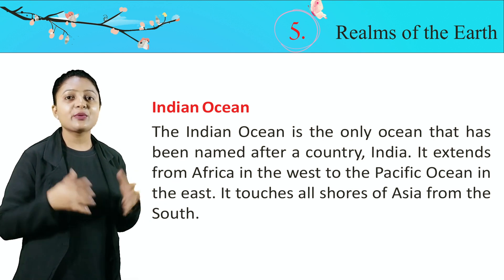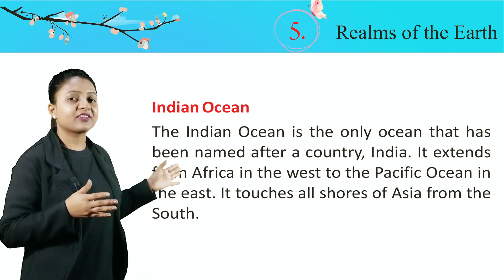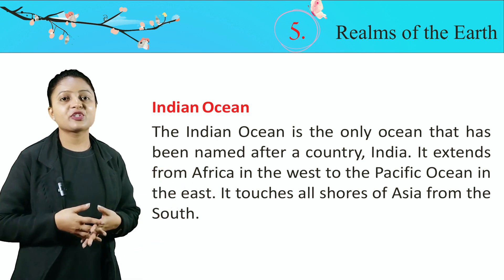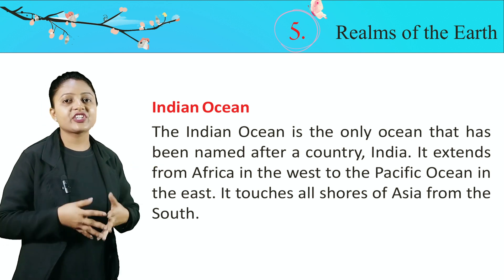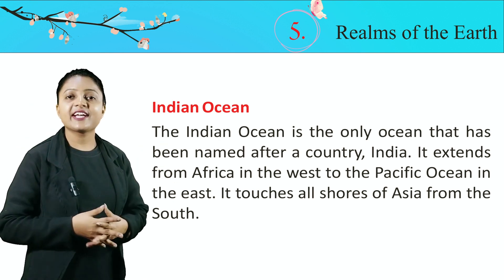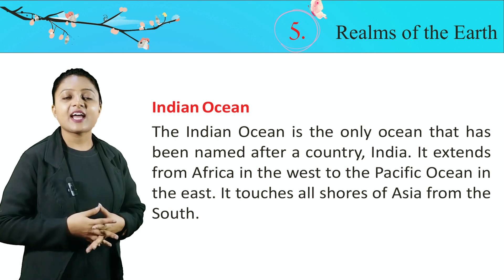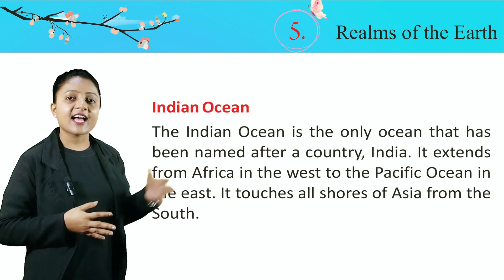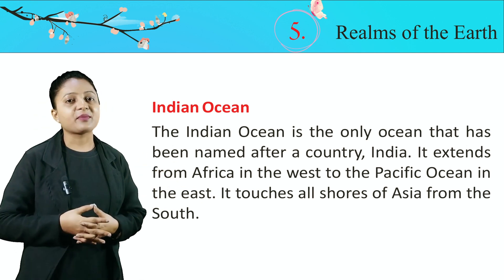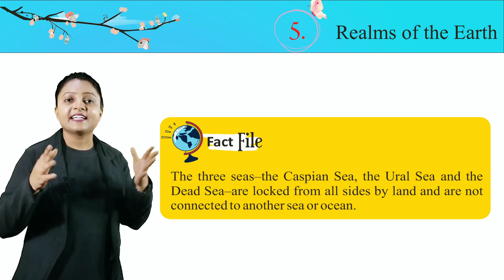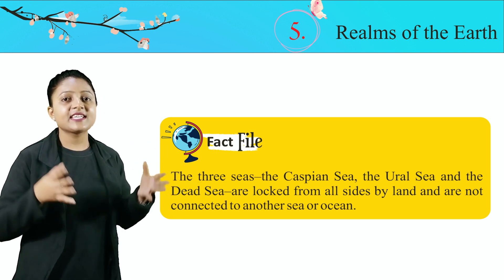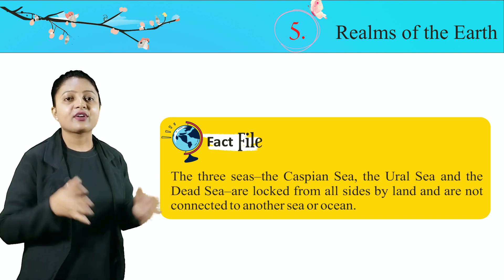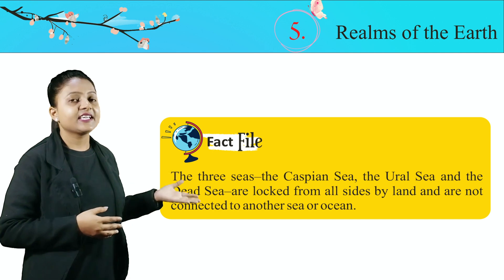Indian Ocean. The Indian Ocean is the only ocean that has been named after a country — India. It extends from Africa in the west to the Pacific Ocean in the east. It touches all shores of Asia from the south. Indian Ocean ek akela aisa ocean hai jiska naam kisi desh ke naam pe hai, jo ki hai India. Fact: The three seas — the Caspian Sea, the Aral Sea, and the Dead Sea — are landlocked from all sides by land and are not connected to another sea or ocean.